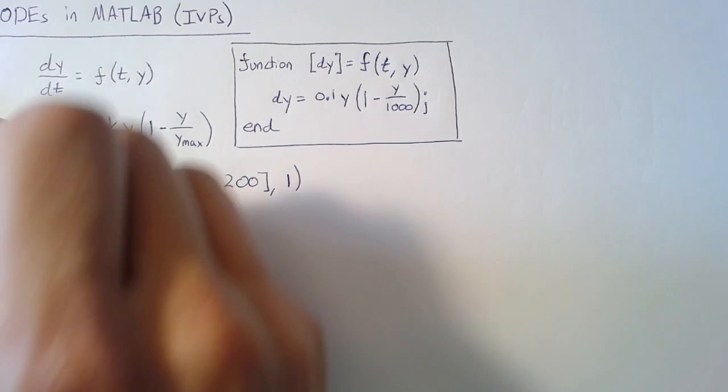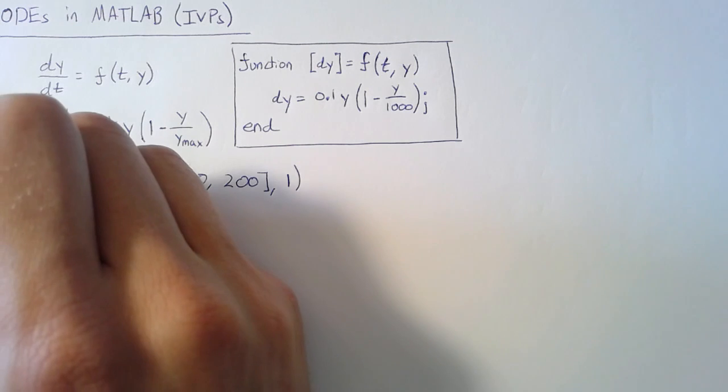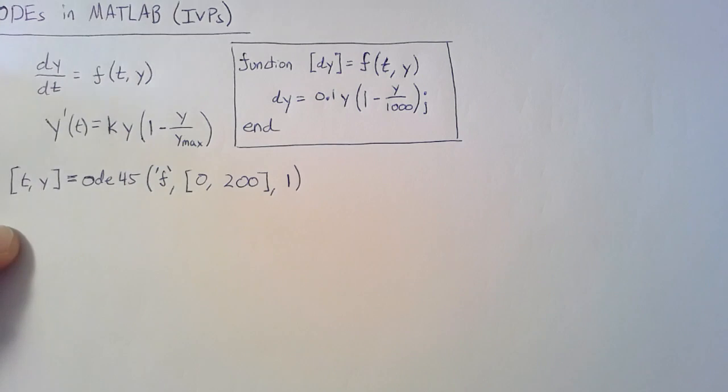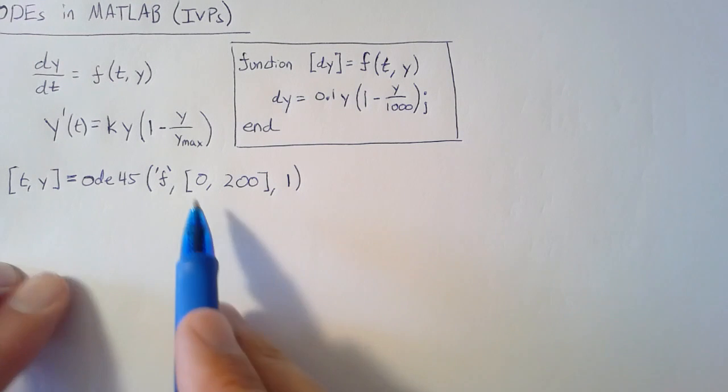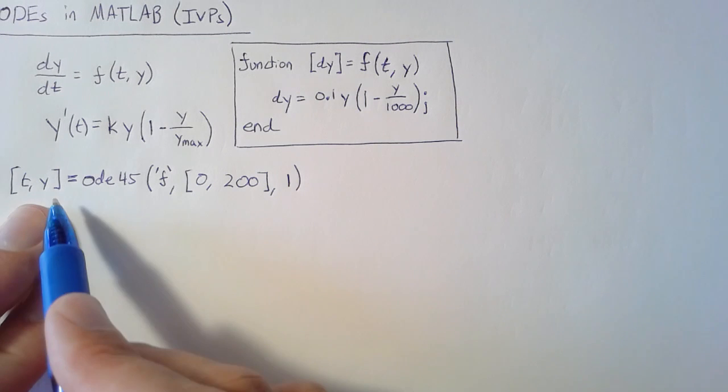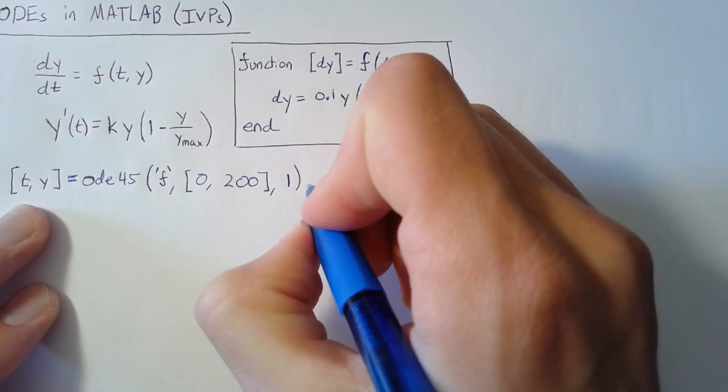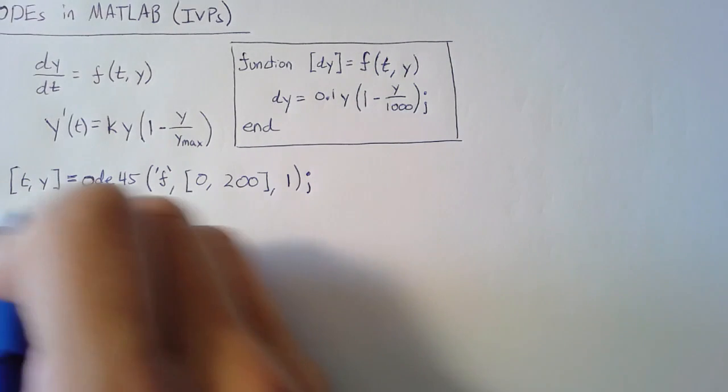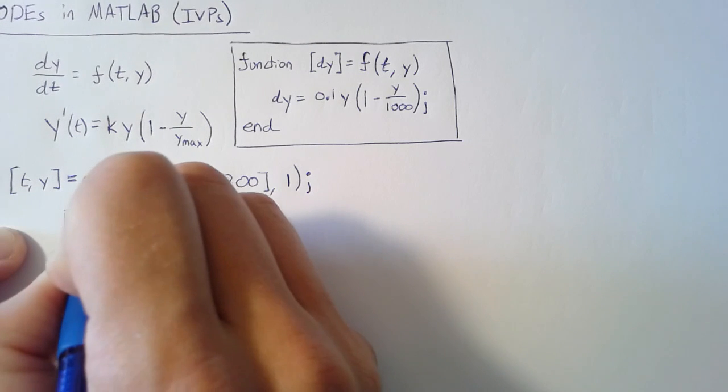If you don't want to plot it right away but you do want to store that information, you can store it in t comma y. This t is the independent variable from 0 to 200, and y is the dependent variable for each of those times. You probably want to suppress this. Once you have this, you can go ahead and plot it or do whatever else you need.